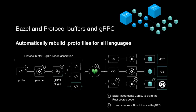Bazel standardizes what you would otherwise do by hand — invoking the protocol buffer compiler manually for each language. If you have a Java microservice using gRPC and a Rust microservice also using gRPC, you simply tell Bazel: here's the proto file, do something with it and invoke the compilers. We generate our protocol buffer serializer and deserializer, generate our gRPC service file, and Bazel will instruct all the languages it knows — Java, Go, Rust, Python, .NET — outputting appropriate binaries for each.